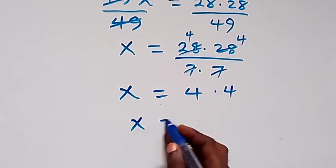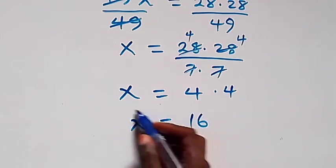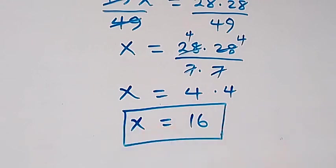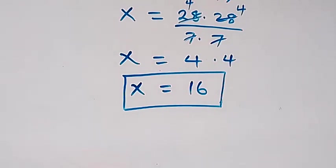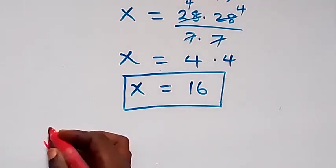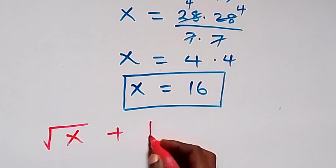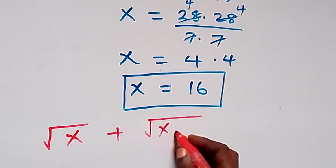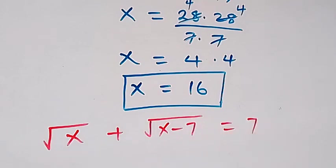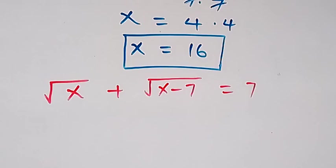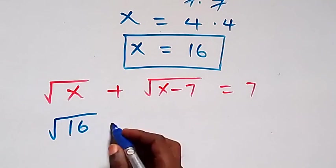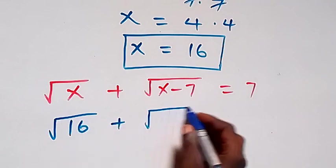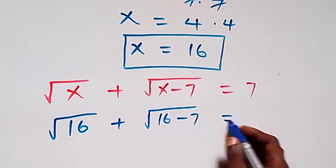Therefore x equals 16. We can verify this satisfies the original problem. Substituting x equals 16 into root x plus root x minus 7 equals 7, we get root 16 plus root of 16 minus 7 equals 7.